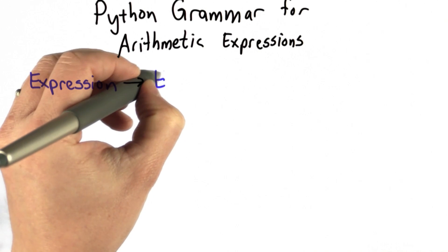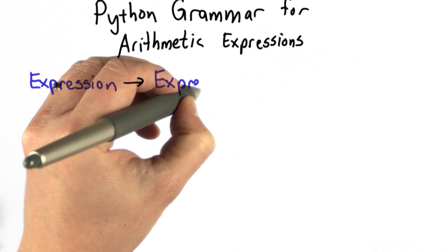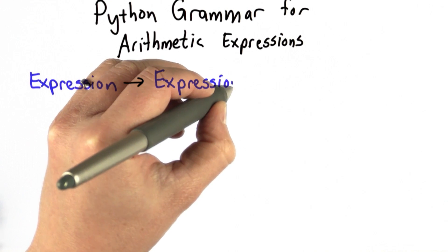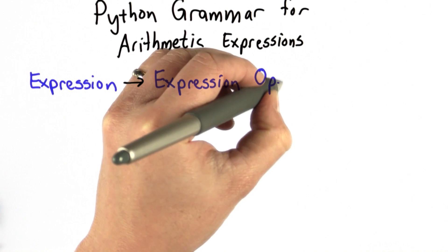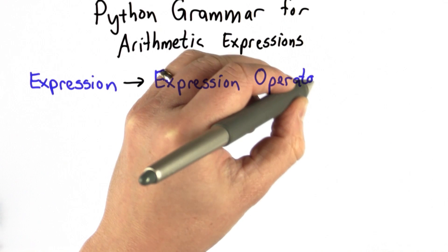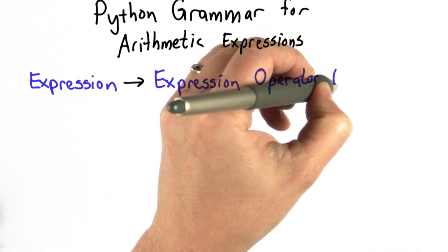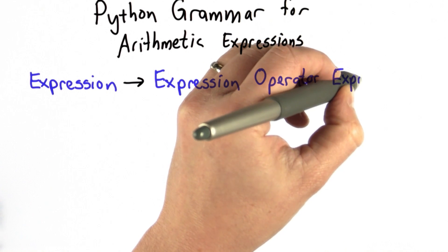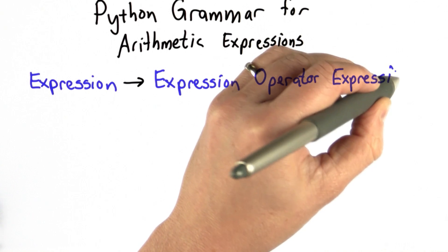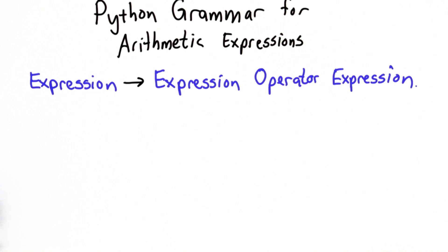First of all, an expression is something that has a value. We're going to start our grammar with the non-terminal expression, and we can make an expression by combining two expressions with an operator. This is sort of like the sentence rule we had for English, where we could make a sentence by combining a subject, a verb, and an object.